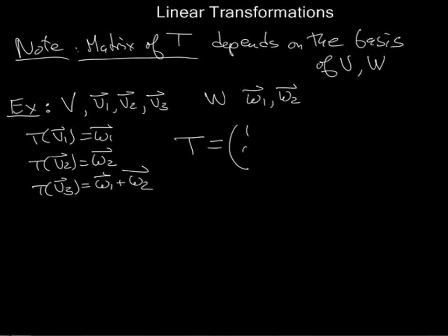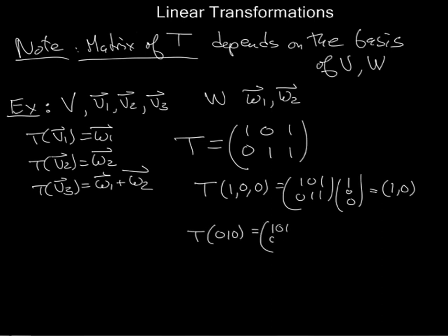Well, then the matrix of this linear transformation looks like this: 1, 0 is the first column, 0, 1 is the second, and 1, 1 is the third. That is to say, T of (1,0,0) is (1,0), T of (0,1,0) is (0,1), and T of (0,0,1) is (1,1). So that's just the three defining relations of T that I gave there in matrix form.